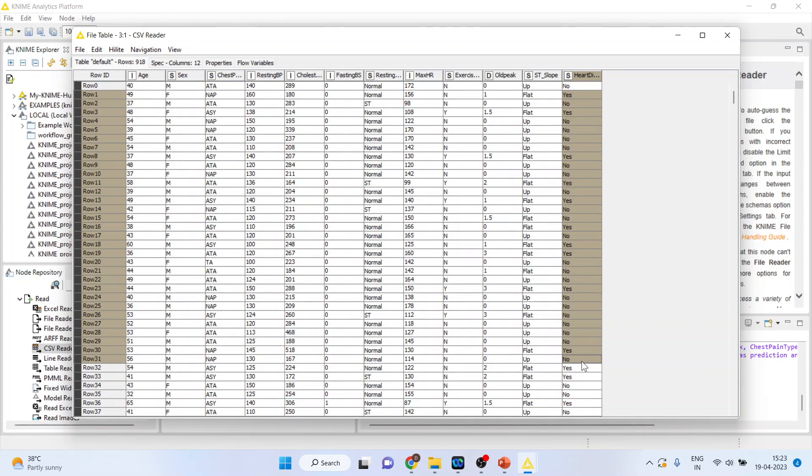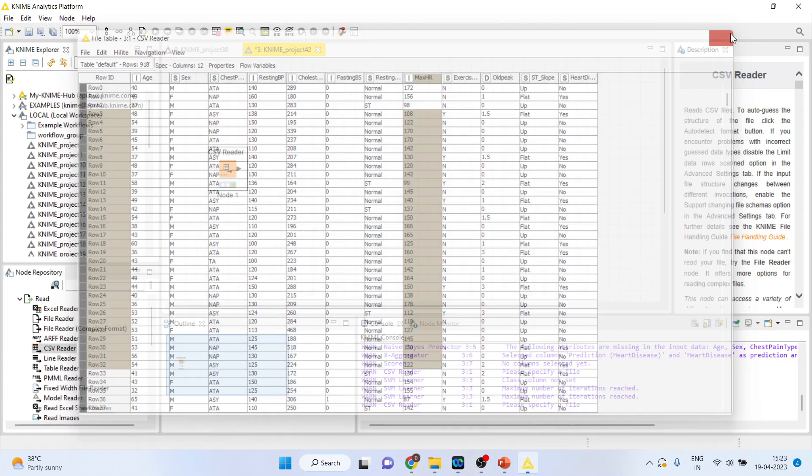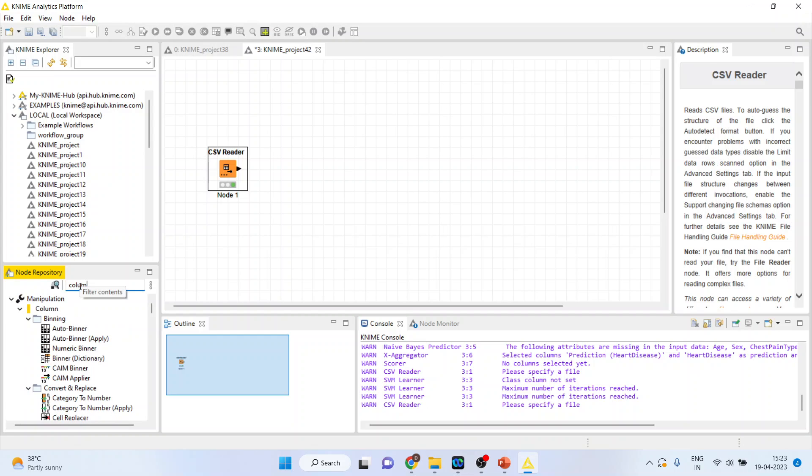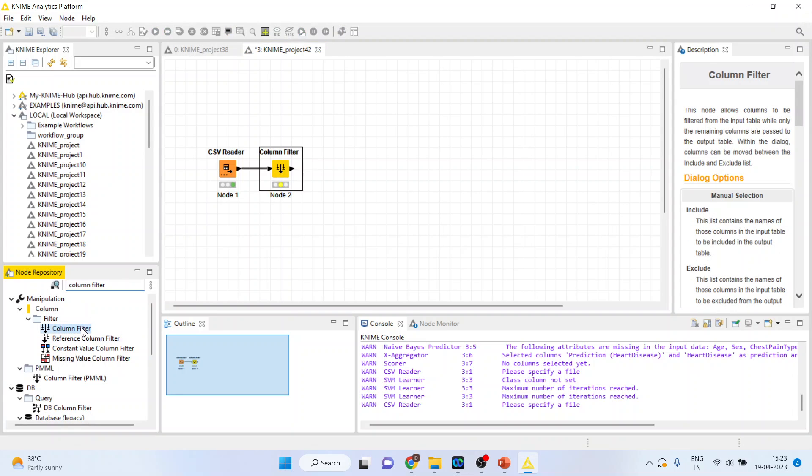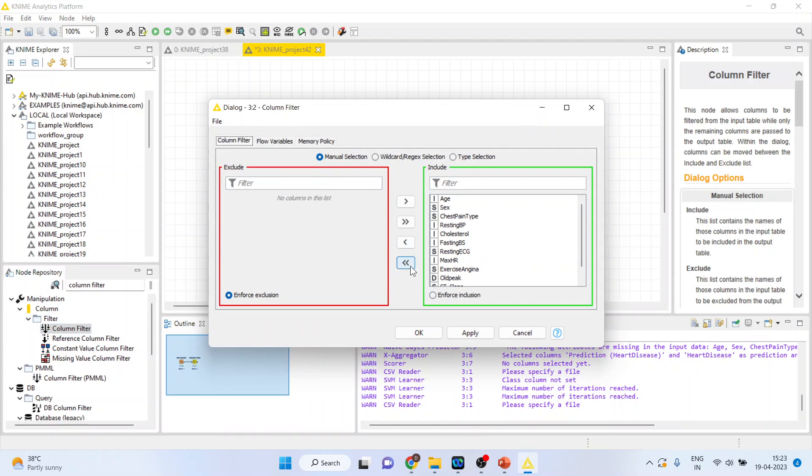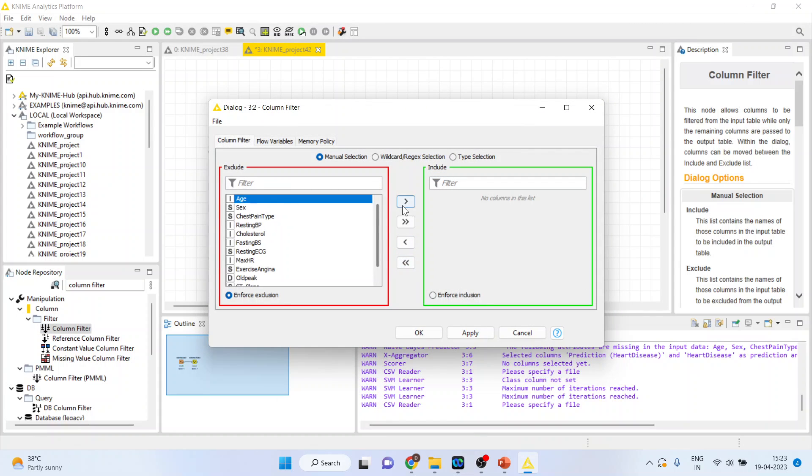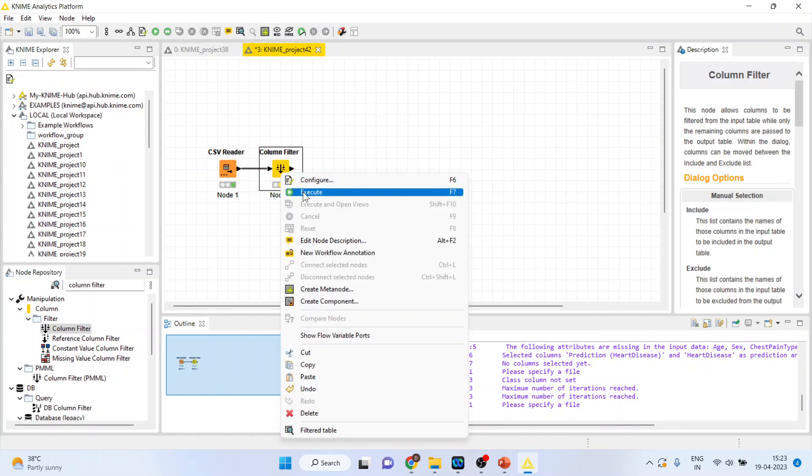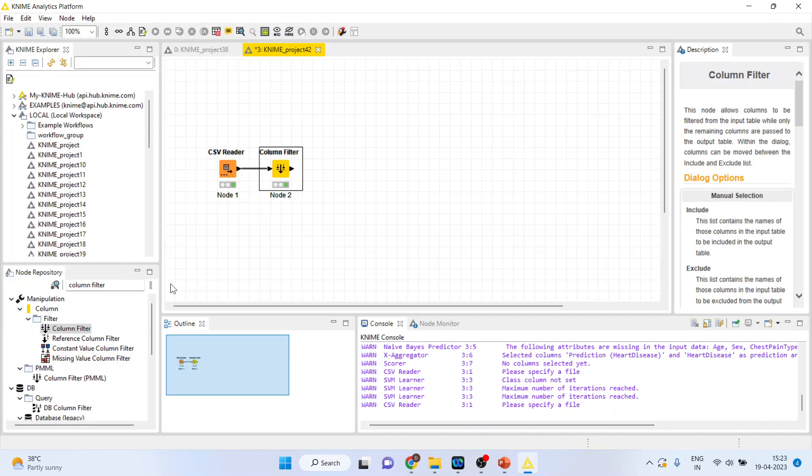I want to do the classification of heart disease on the basis of age, resting blood pressure, cholesterol, and maximum hours of exercise. I will activate the column filter from here so that I can only include those variables which are necessary for us. Right click on it and configure. I will include age, resting blood pressure, cholesterol, maximum hours of exercise, and heart disease. Click OK. Right click on it and execute.